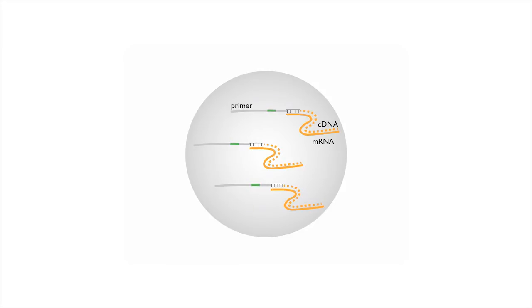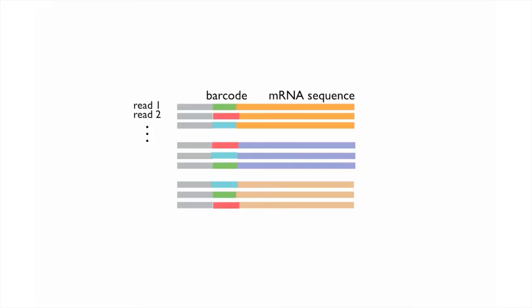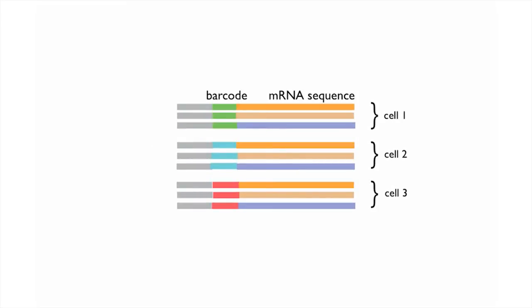What we end up with is a collection of DNA sequences — copies of the RNA sequence — that are now divided by which drop they came from. We then break the droplets and treat the entire cell population as a single bulk sample, knowing that each one of the cells has been individually barcoded. After sequencing, we get a mixture of reads, each read containing a different barcode, and we can group all of the reads from one cell together, and do the same for each subsequent cell in our sample.